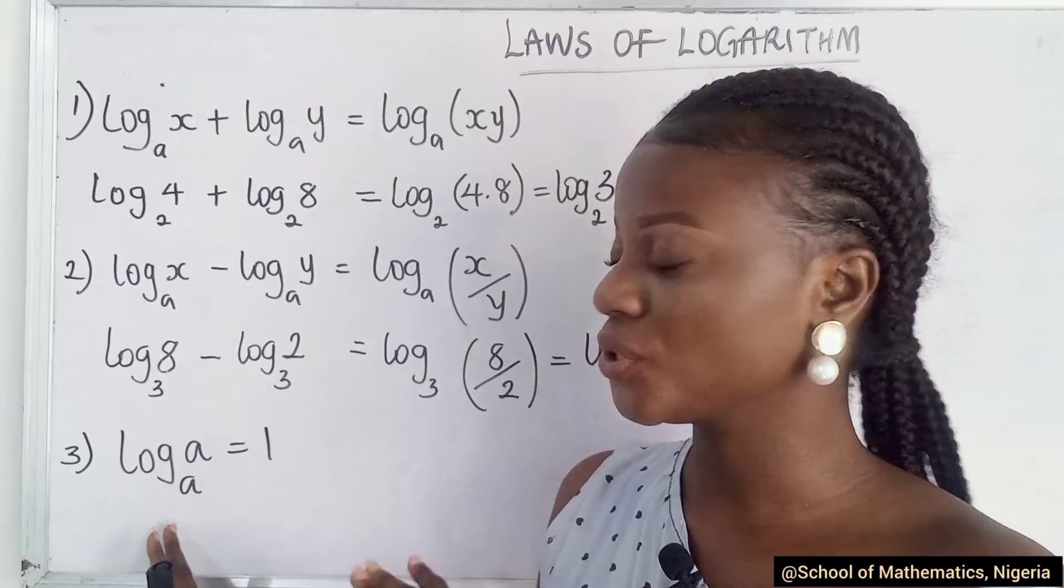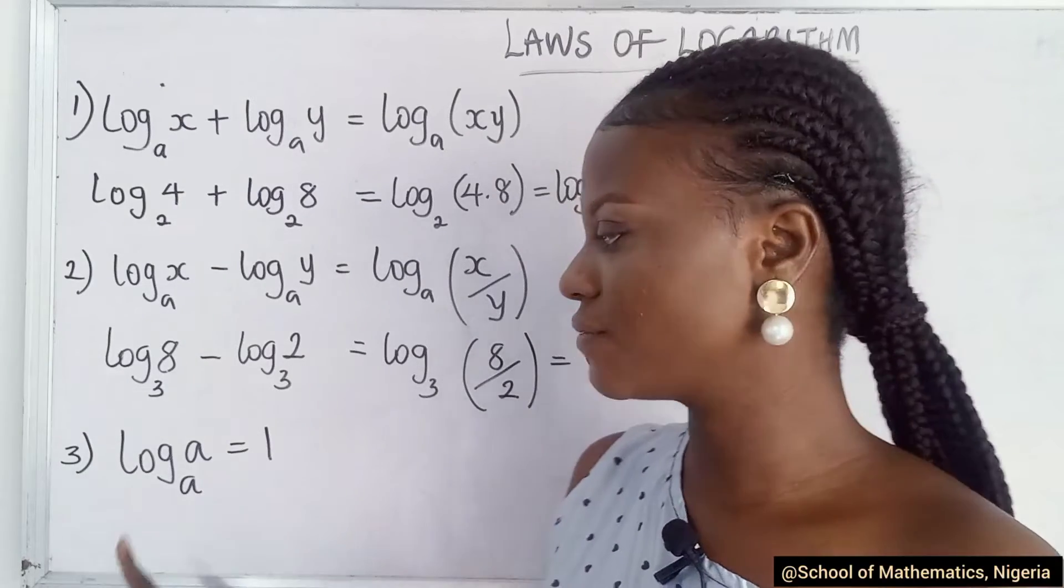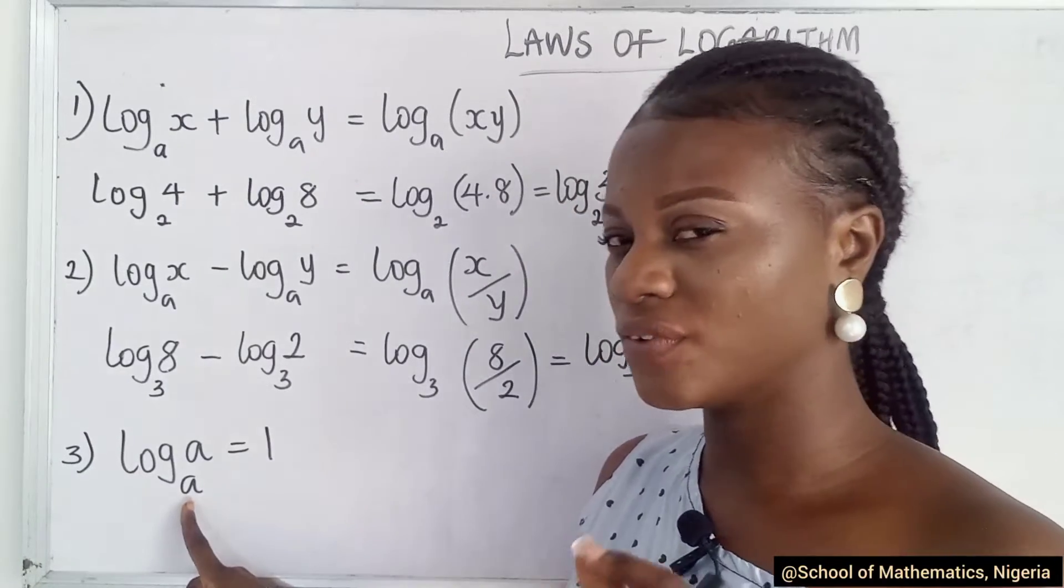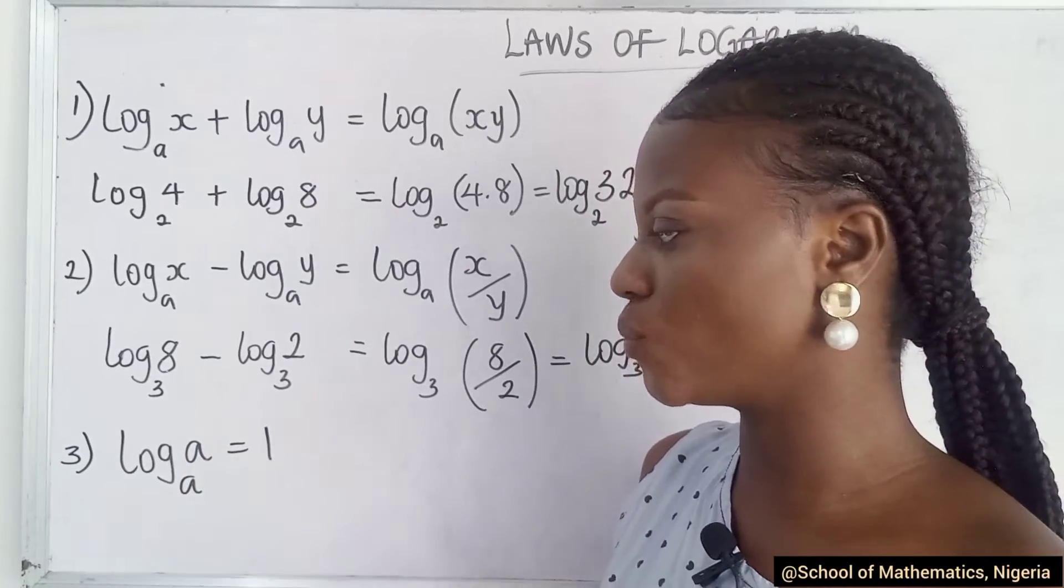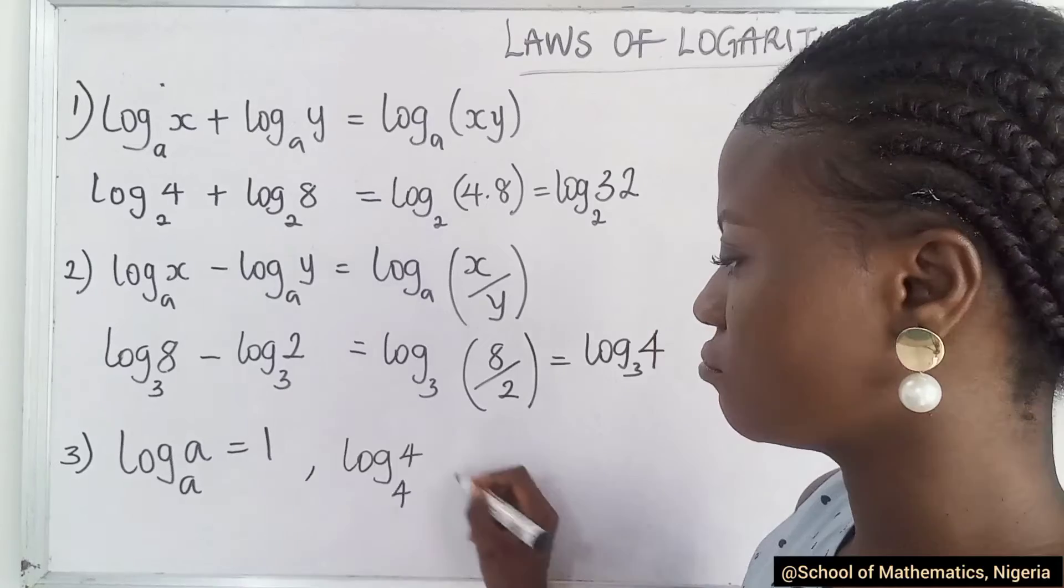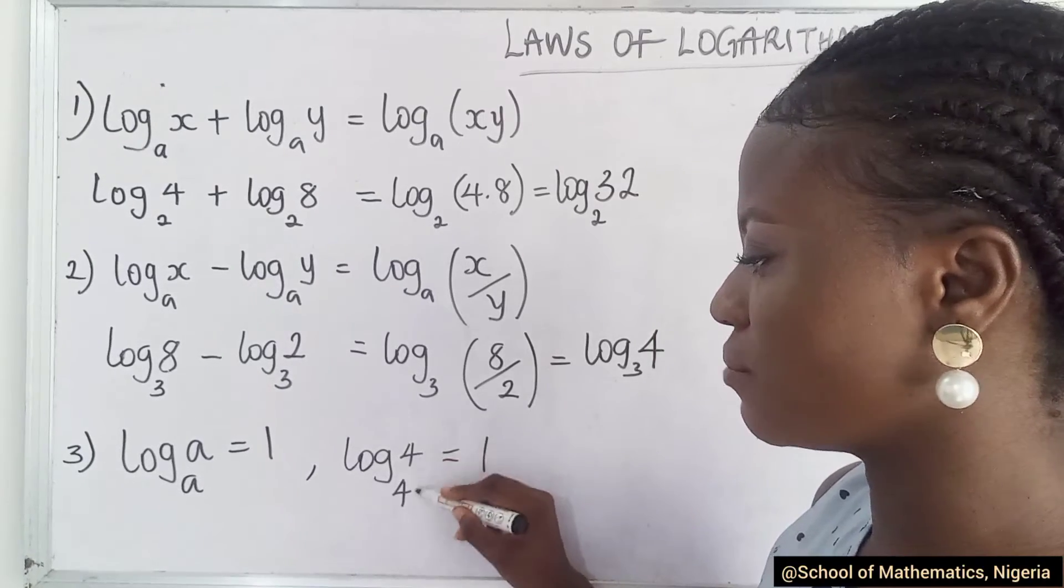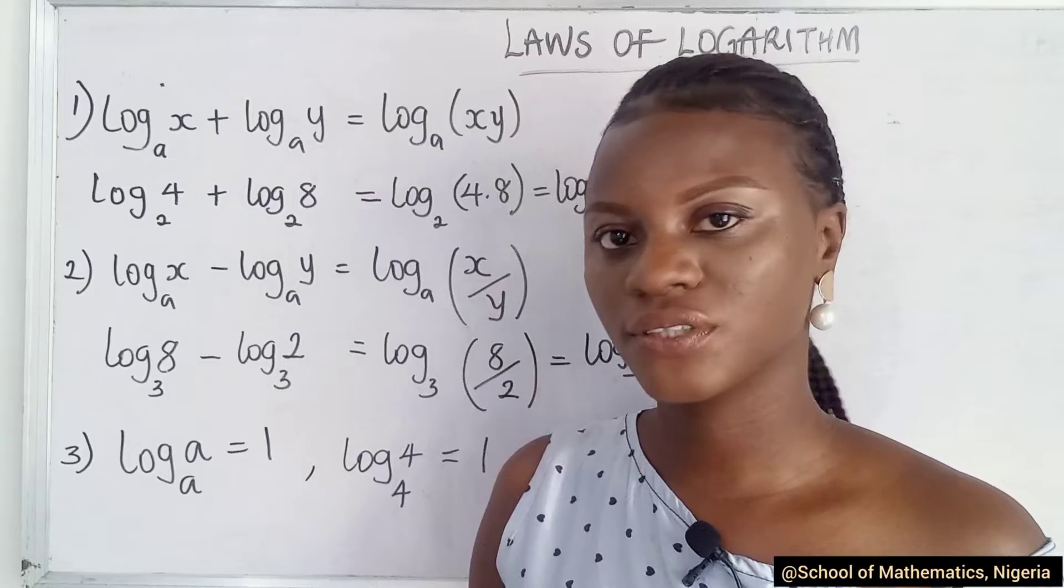This can also be called same base rule, where you have the log to the base of a value same as this. It will give you 1. For example, you just know it's 1 because you have same numbers or same values given.